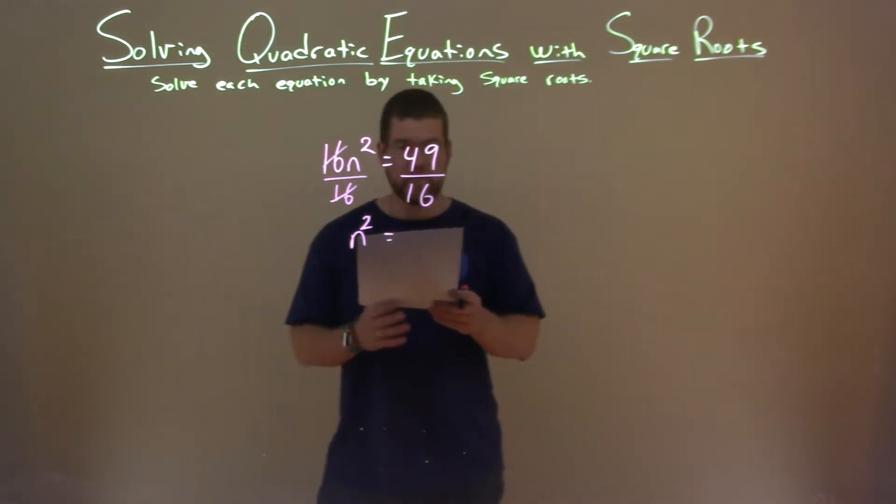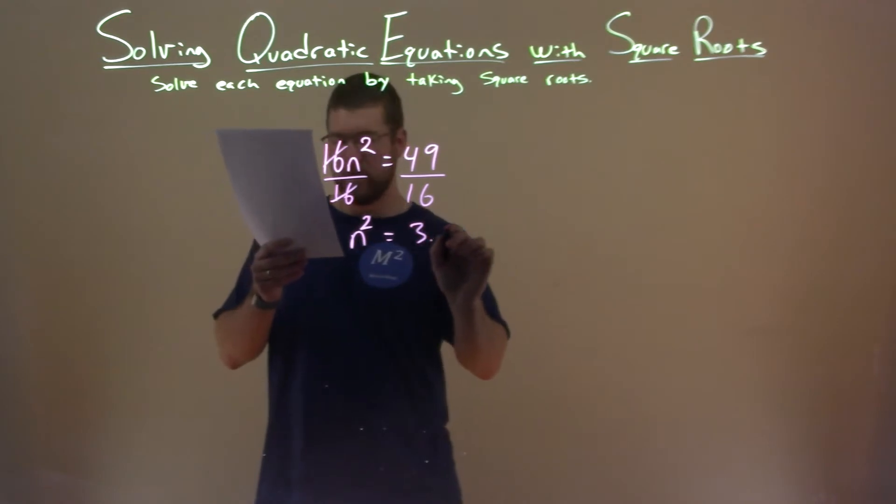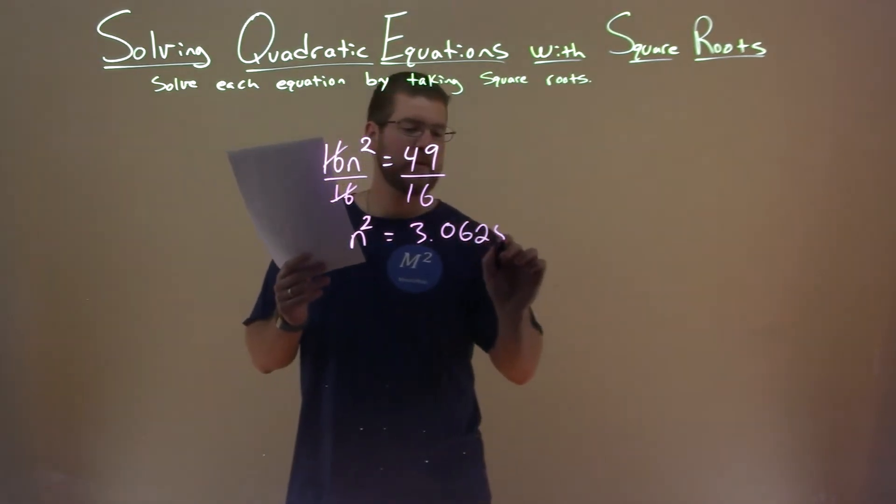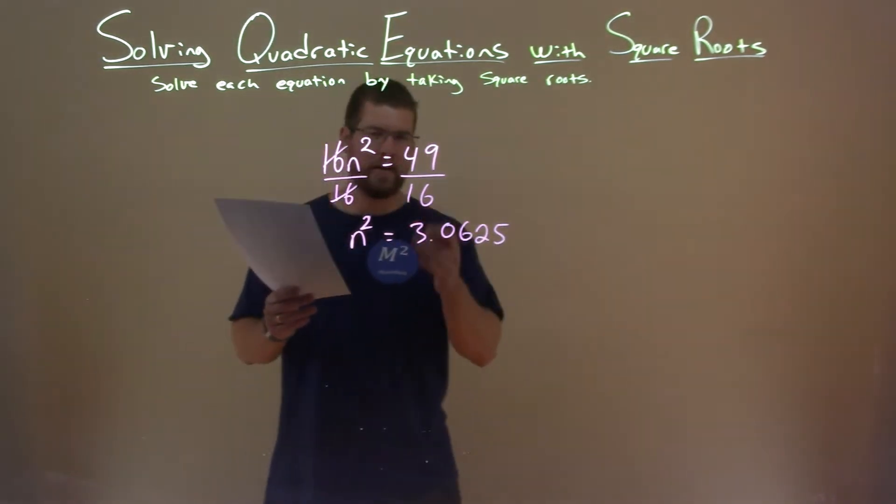Well, what's 49 divided by 16? Well, it's a decimal. That's 3.0625. Don't worry, I didn't know that off the top of my head either.